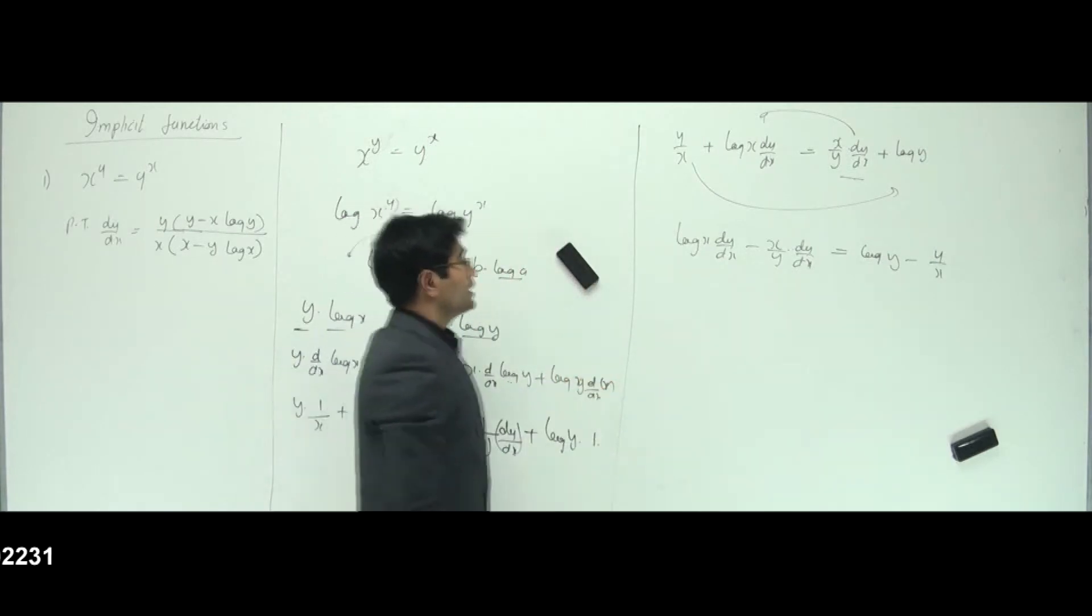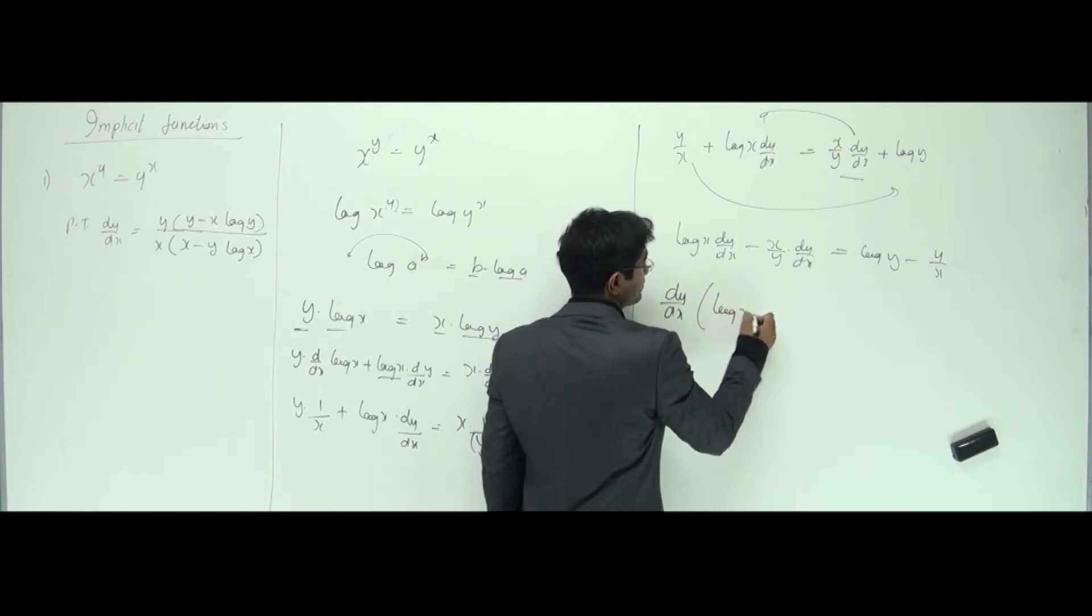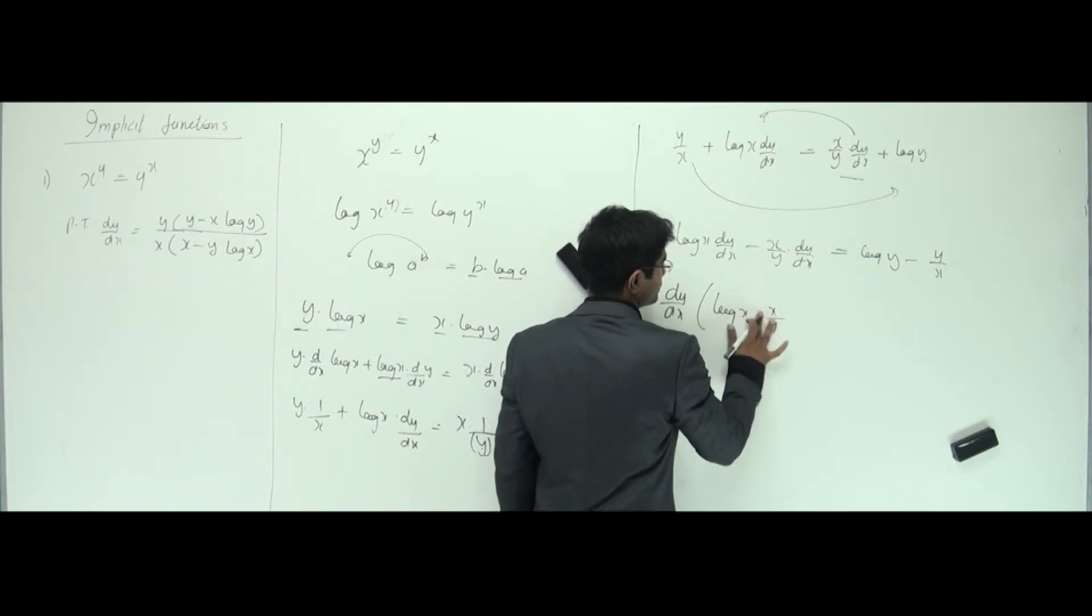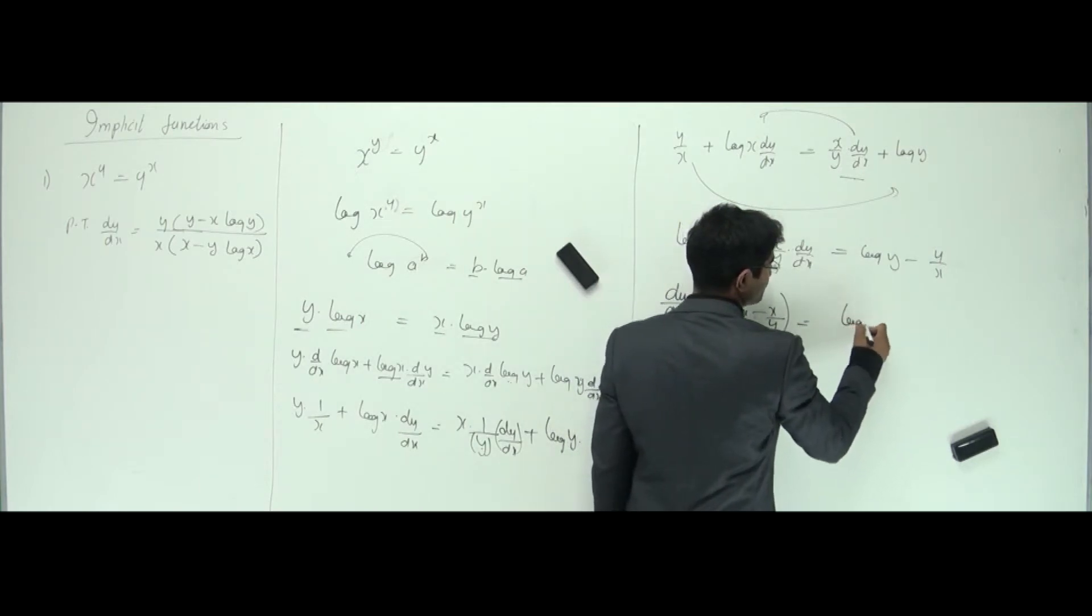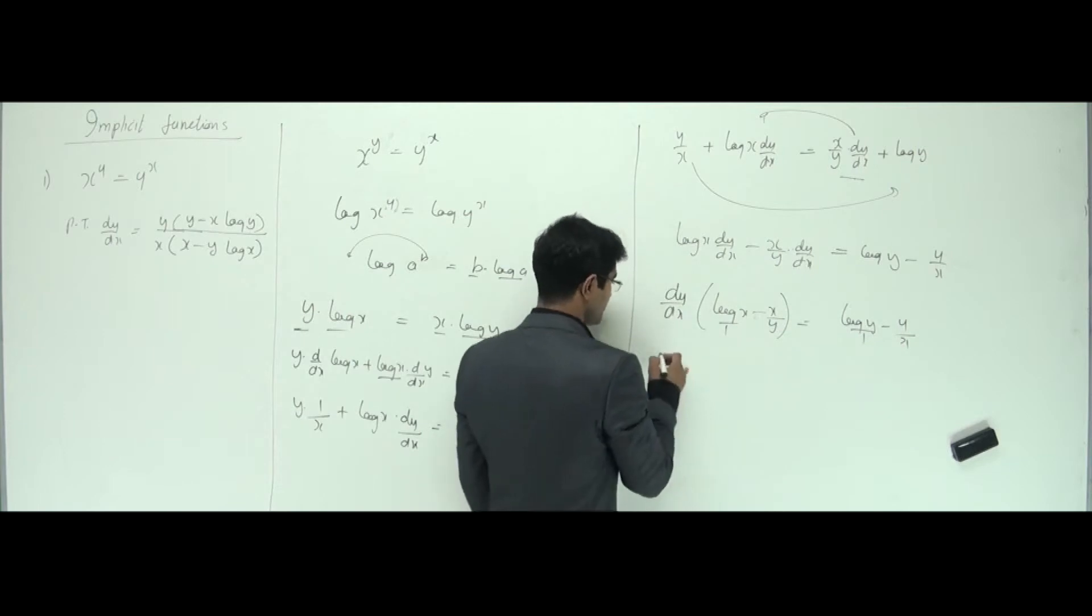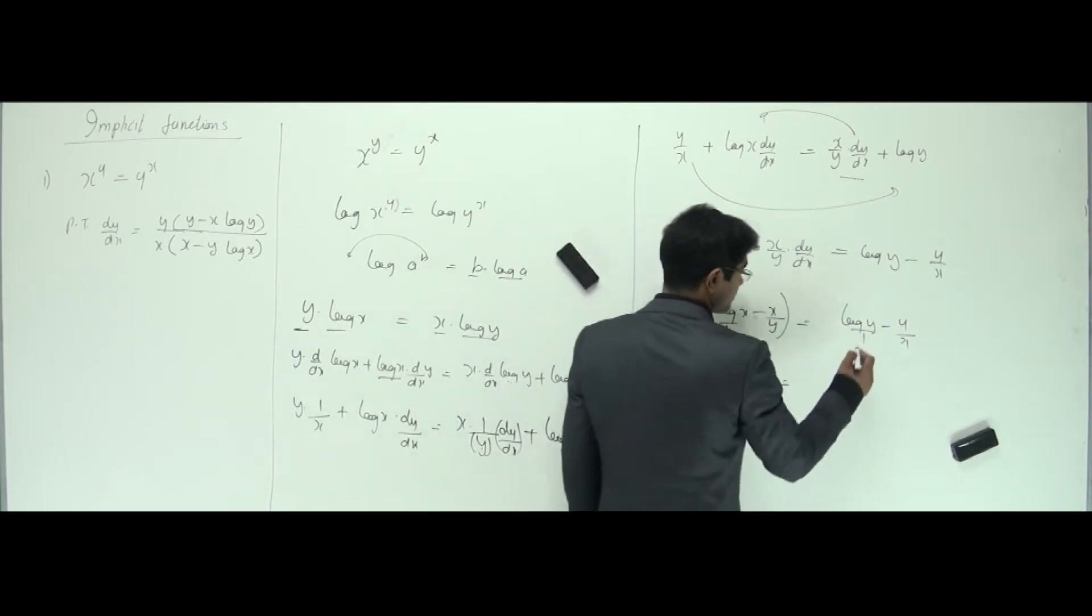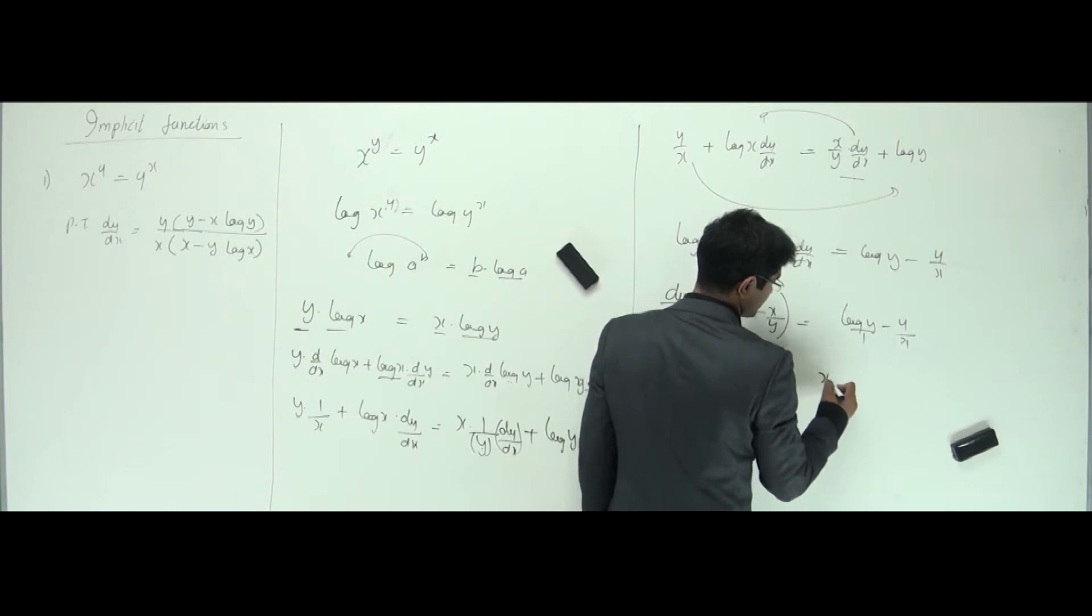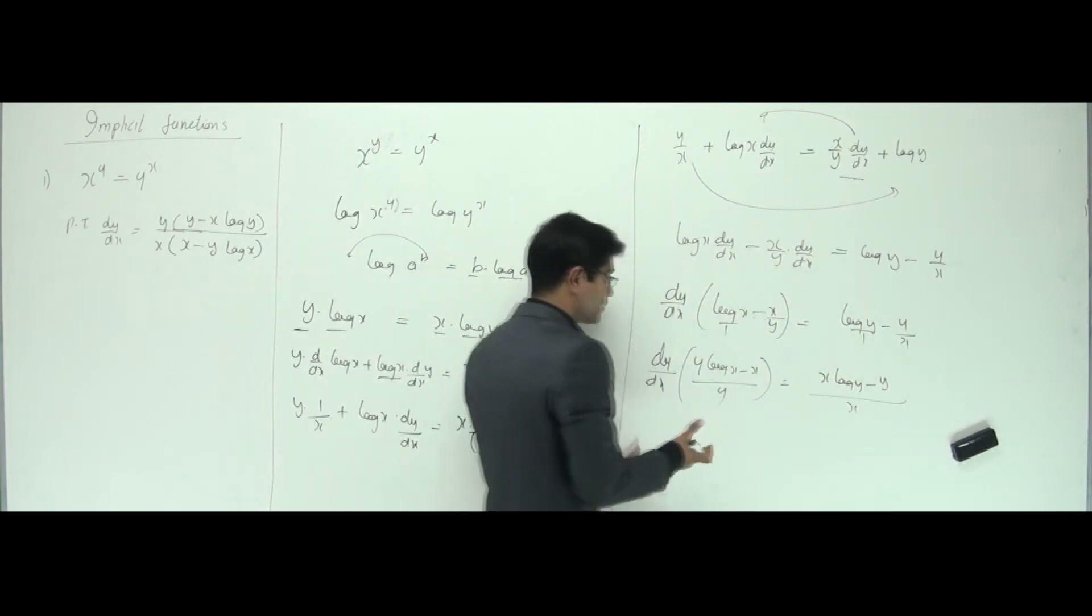Okay, now what happens? I can take dy by dx common out here. This I'm looking for, that is like log x minus x by y. That's what I have here. So here I have log y minus y by x. Can I take the LCM in both places here? Yes. So dy by dx, it goes like, let's say y is the LCM, it goes like y log x minus x. What about this guy? It goes like x log y minus y by x. That's what I have.